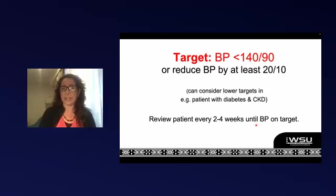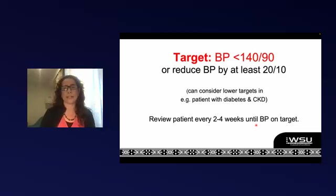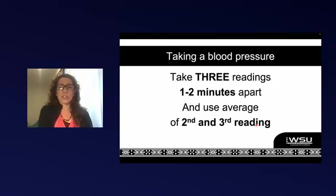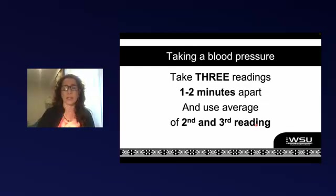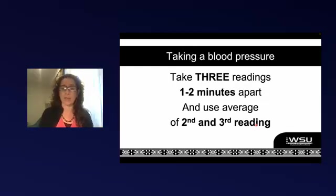The general recommendation is to try and get people to target quickly — seeing them every two to four weeks. The EML does make provision for monthly visits, as it can be difficult for patients to get to the clinic every two weeks. When taking a blood pressure reading, we usually take three readings on the first visit, one to two minutes apart, with all rules observed, and use the average of the second and third reading to decide on the blood pressure to treat.